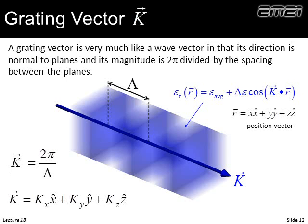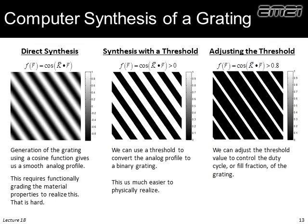Just to remind us: what is a grating vector? Imagine some material property varying in amplitude according to a cosine. We define a vector perpendicular to those planes whose magnitude is 2π divided by the spacing between the planes. Given this grating vector K, we can describe the dielectric constant as some average plus a contrast times the cosine of K·r. This cosine K·r is really the utility of the grating vector — we can just dot-product with position and reconstruct our grating.